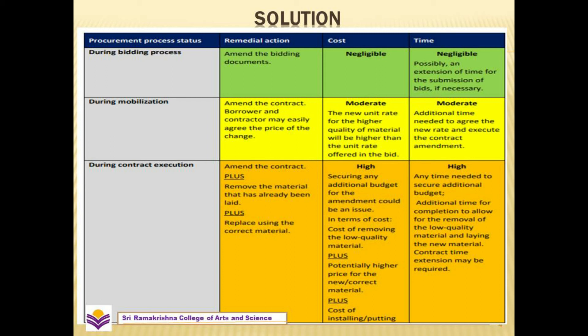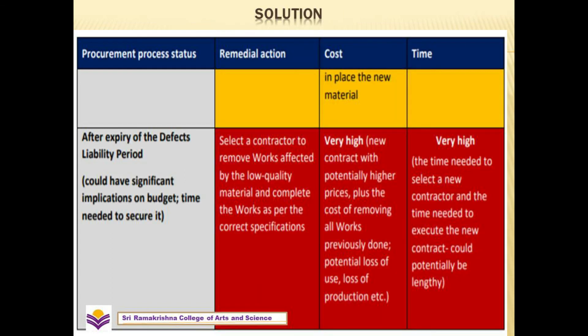During mobilization, amend the contract — cost and time are moderate. During the contract execution period, amend the contract plus remove already-laid material and replace with correct material — cost and time required are very high. At the final stage of the procurement process, the remedial action is to select a new contract to remove works affected by low quality material and complete the works. The cost and time are also very high.